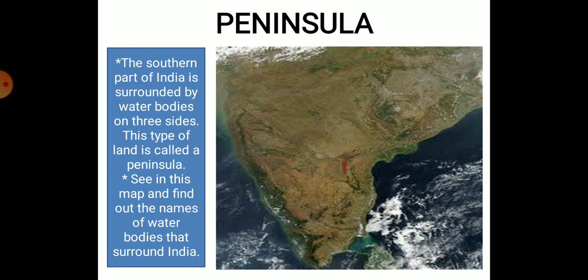The southern part of India is surrounded by water bodies on three sides. Can you identify which three water bodies surround it? Yes — the Bay of Bengal, Arabian Sea, and Indian Ocean.